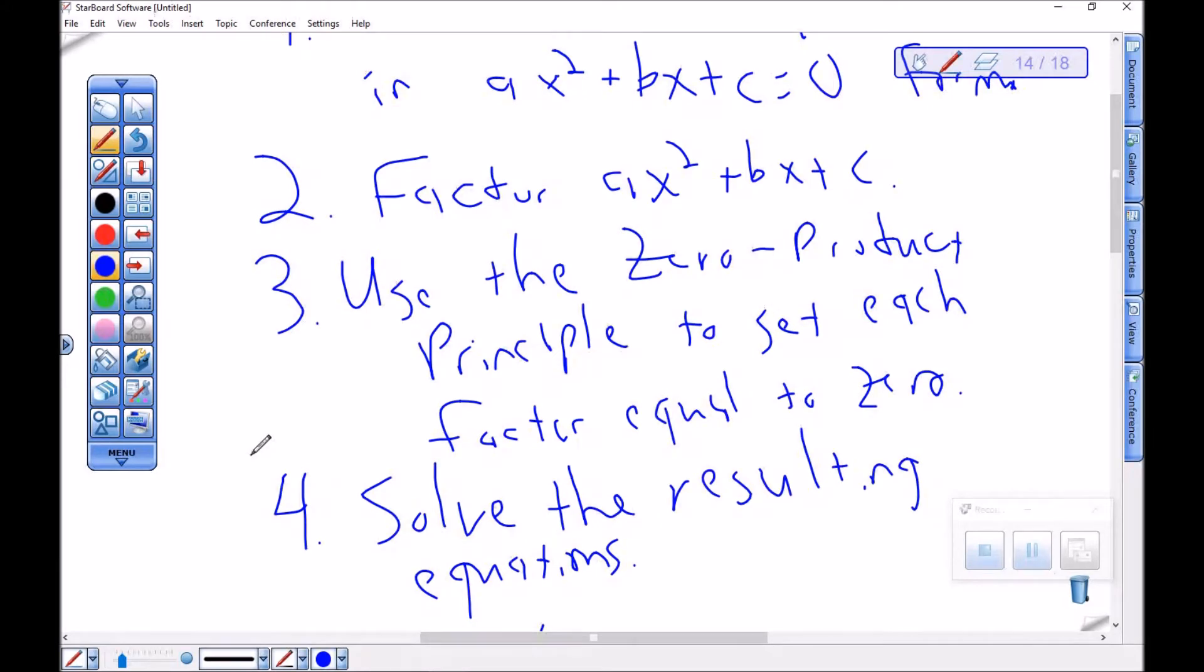However, if they multiply together to be 0, then for sure one of them was 0. So we've got that zero product principle. That's key, which is why we have to set it equal to 0.